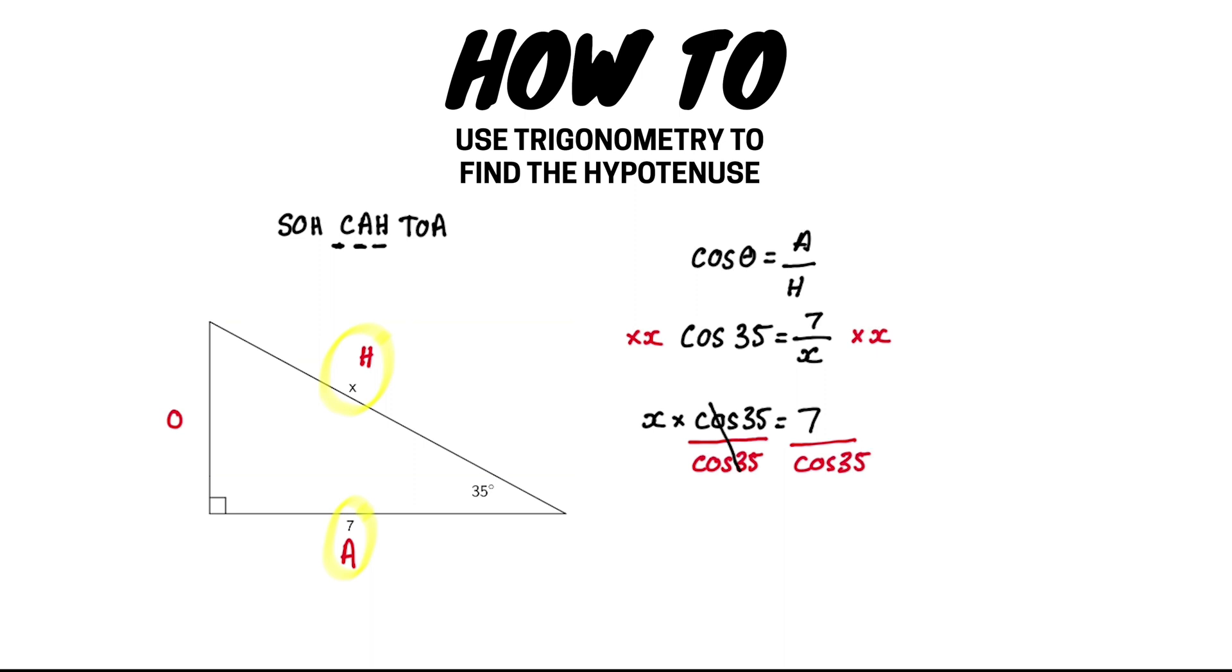We can then cross out the cos 35 from the left hand side of the equation, because anything divided by itself is 1. And we now have x equals 7 divided by cos 35. You can see that to get to this step from the second line of working, we have literally just swapped the position of the x and the cos 35.